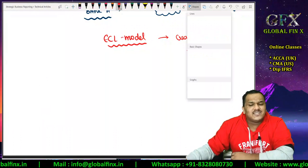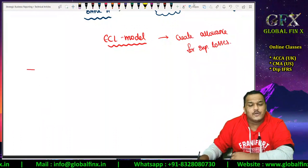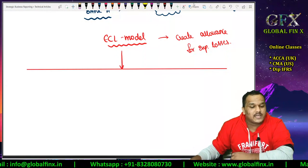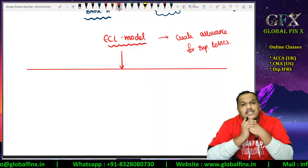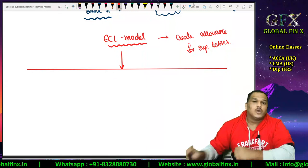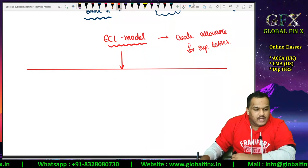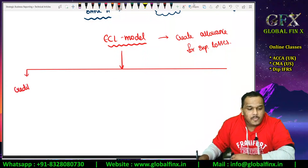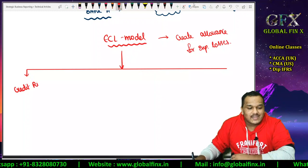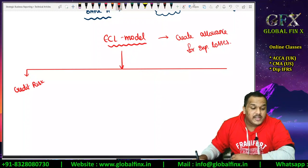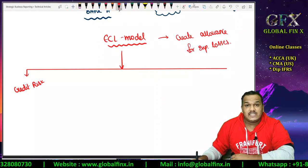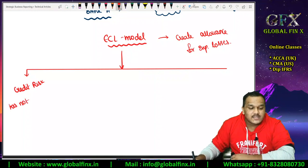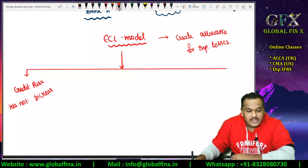But if it is that simple, then why are students getting confused? Because there are actually three stages under which the loss allowance has to be created, and that is where students get completely confused. I'll make it very simple. The first stage is where the credit risk has not increased significantly.